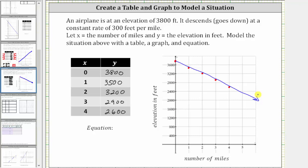And let's work on determining the equation. Again, the starting elevation is 3,800 feet, and then it decreases at a rate of 300 feet per mile, where x is the number of miles, which means y, the elevation, is equal to 3,800 minus 300 times x, or minus 300x. And we can also write the equation as y equals negative 300x plus 3,800.